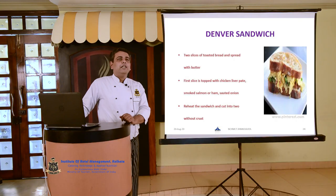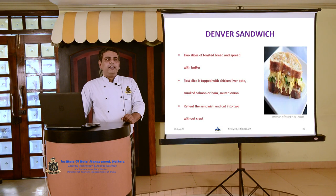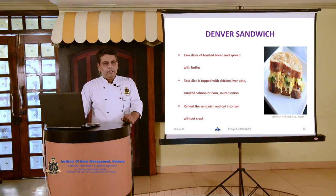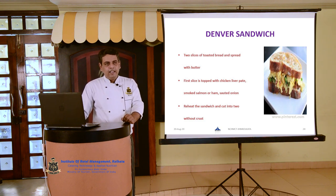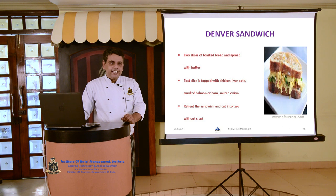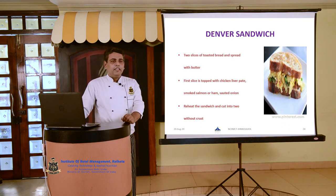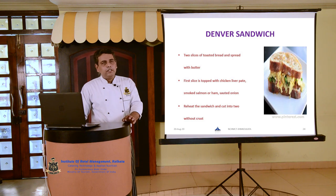Next is Denver sandwich, one of the most popular sandwiches. Two slices of toasted bread are smeared with butter. The first slice is topped with chicken liver pâté and topped with smoked salmon, ham, or sautéed onion. The sandwich is then reheated until the crust is nicely done, and it can be served without crust.